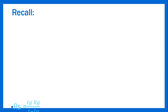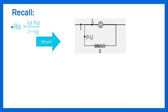Recalling from the previous lesson, a shunt is a resistor connected to a galvanometer that is used to convert a galvanometer to an ammeter. The shunt formula is: R = (IG × RG) / (I − IG), where R is the resistance of the shunt, IG is the full-scale deflection current of the galvanometer, RG is the resistance of the galvanometer, and I is the maximum current you want the ammeter to measure.